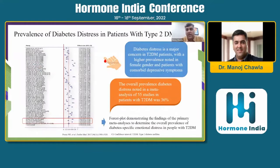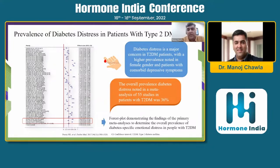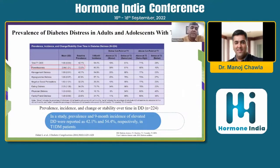Looking at the prevalence of diabetes distress specifically in Type 2 patients: diabetes distress is a major concern in Type 2 diabetes, with higher prevalence noted in the female gender and patients with comorbid depressive symptoms. This is particularly true in a country like India, where women very often prioritize the welfare of male members in the house, often neglecting their own needs and mental health. The overall prevalence of diabetes distress, noted in a meta-analysis of 55 studies, was found to be about 36%. So every third patient we see with Type 2 diabetes has some amount of diabetes distress.